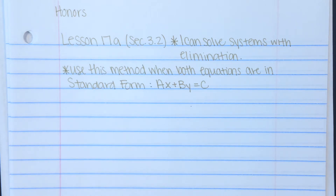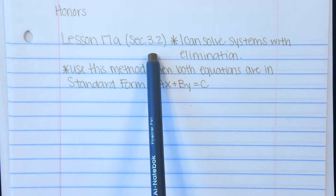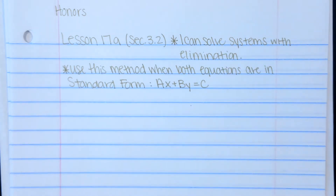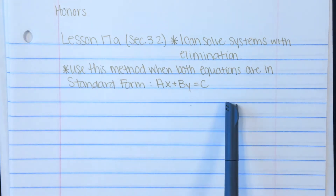Lesson 17 and 17A are connected because you're solving systems algebraically. 17 was substitution; 17A is elimination. This is in section 3.2 of your textbook. Your learning objective is: I can solve systems with elimination — systems of linear equations. This method is the easiest when both equations are in standard form, that AX plus BY equals C.